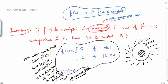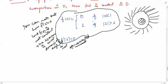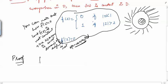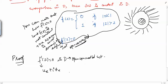We call open connected subsets of C as domains — that is just terminology. So this result is valid only when the domain of definition is an open connected set. Now let us prove it. The proof is very simple. We have f'(z) = 0 in D, and we know that f'(z) = uₓ + i·vₓ = 0. This implies uₓ = 0 and vₓ = 0 in D.